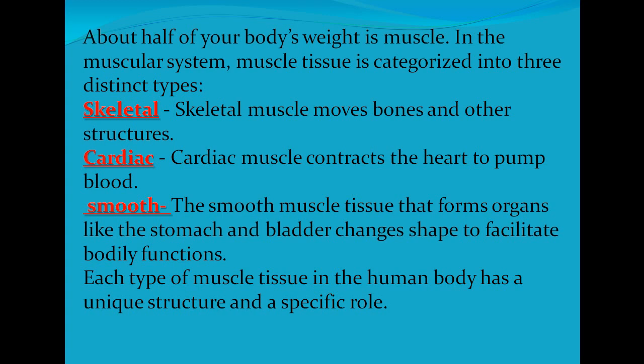Skeletal muscles move bones and other structures. Cardiac muscles contract the heart to pump blood. The third type is smooth muscle — smooth muscle tissue forms organs like the stomach and bladder, and changes shape to facilitate bodily functions.